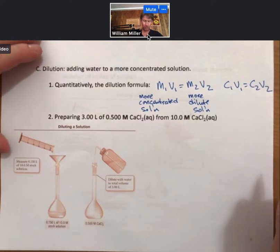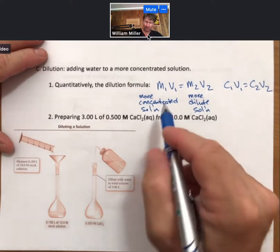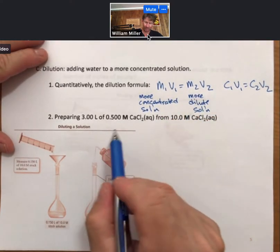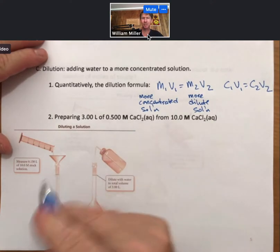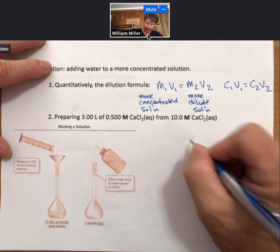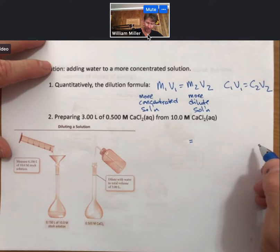Now for number two, preparing 3.00 liters of a 0.500 molar calcium chloride solution from 10.0 molarity calcium chloride solution. We're going to take the M1V1 equals M2V2 formula. We see that of the two molarities, 0.5 molar is more dilute, less concentrated. That's going to be my M2. I'm going to fill my M2 and V2 over here.